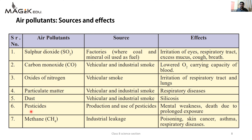Sixth pollutant is pesticides. Production and use of pesticides - pesticides, fertilizers yeh zyada tar agriculture mein use hote hain. Par inka overuse air pollution bhi cause kar sakta hai. Kyunki ise jab spray kiya jaata hai to iske droplets air mein mix ho jaate hain. Aur agar kisi healthy person ne use inhale kar liya to usmein mental weakness aa sakti hai. Death due to prolonged exposure - yani agar wo zyada time tak us environment mein raha jahan pe pesticides zyada use ho raha hai, to uski death bhi ho sakti hai.